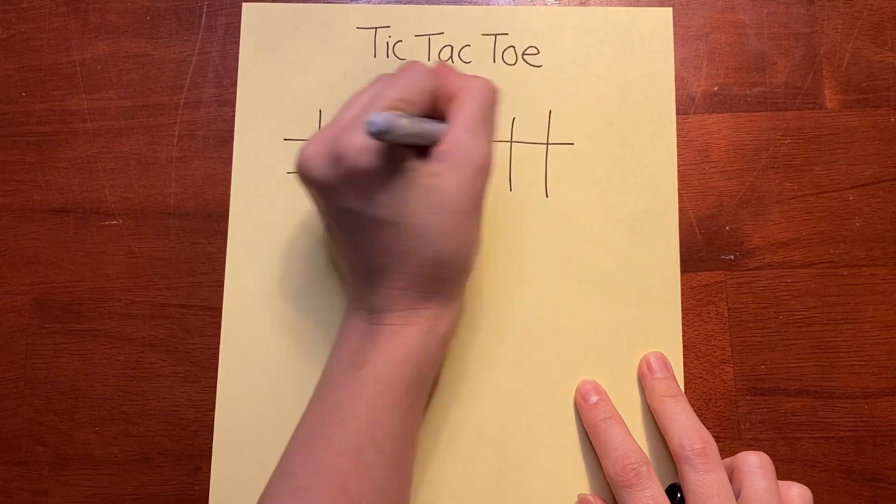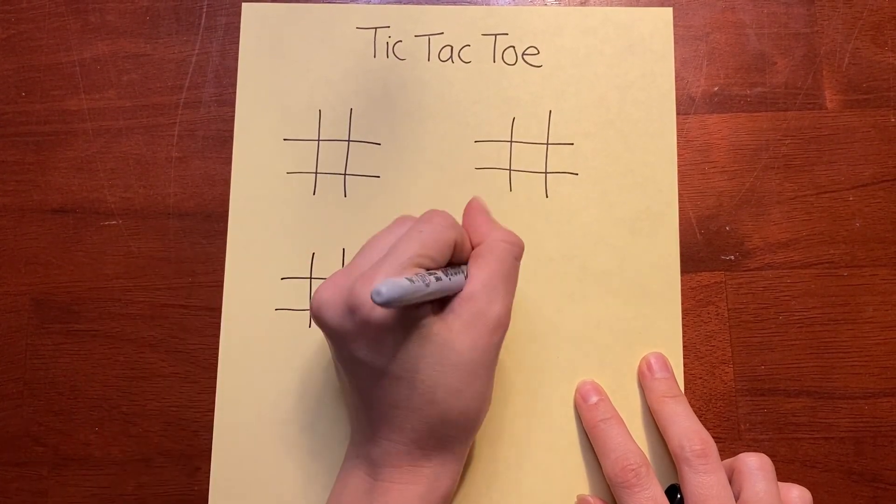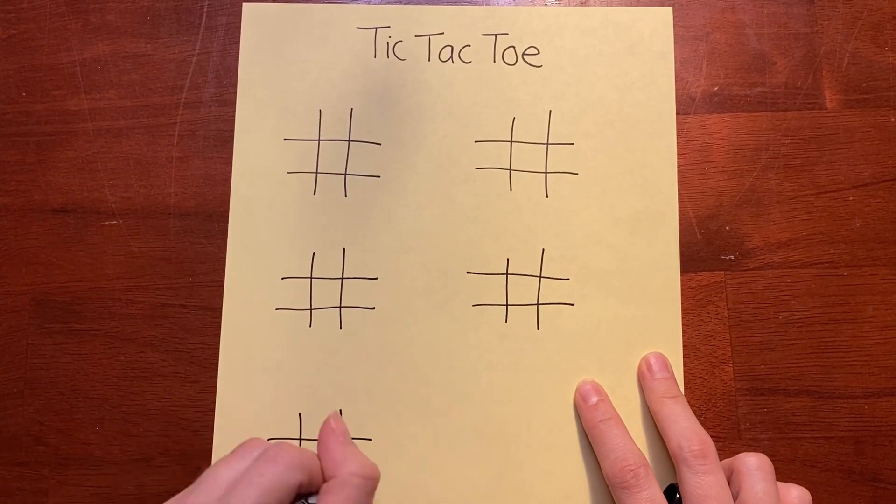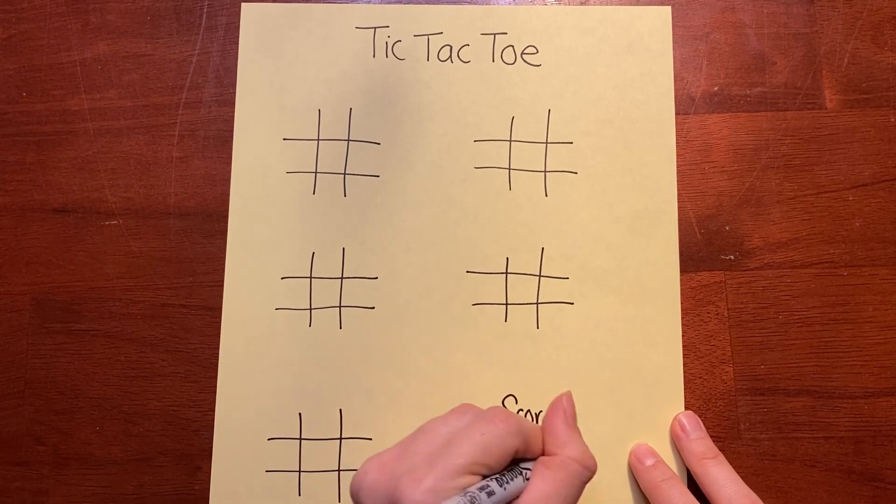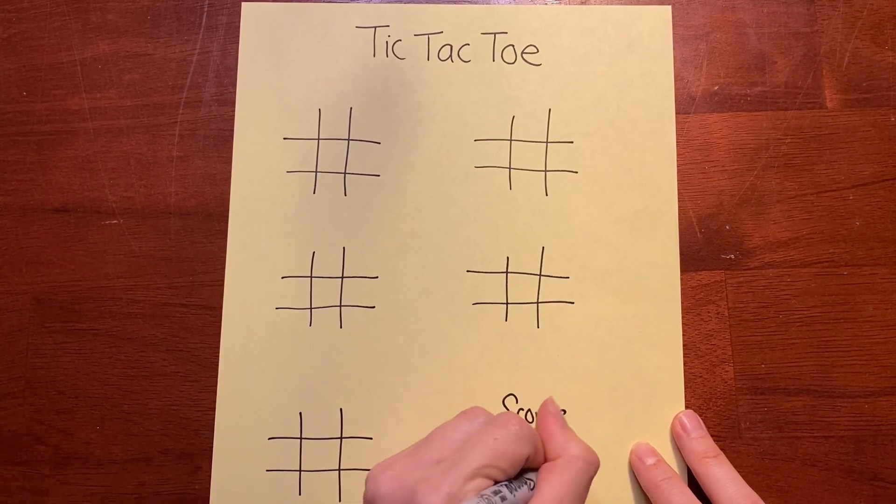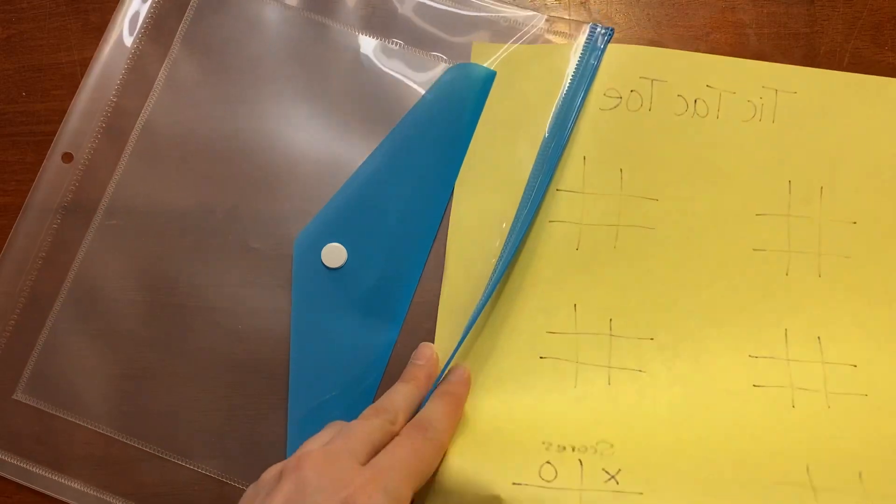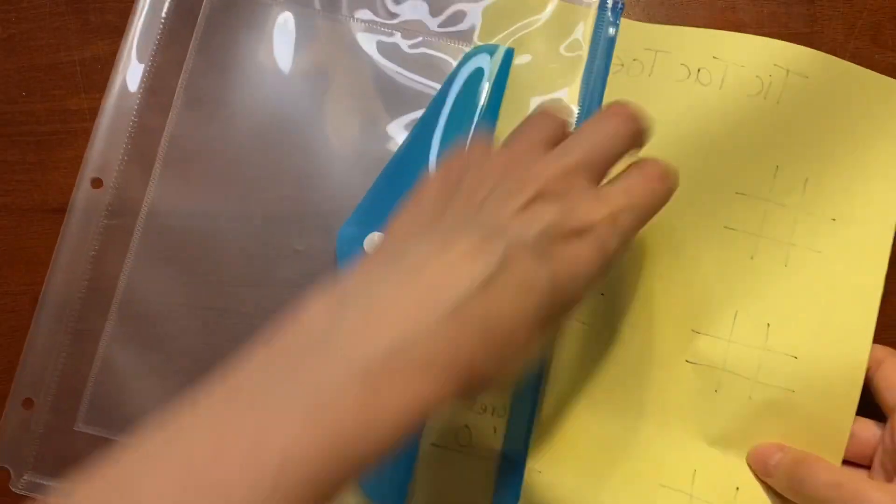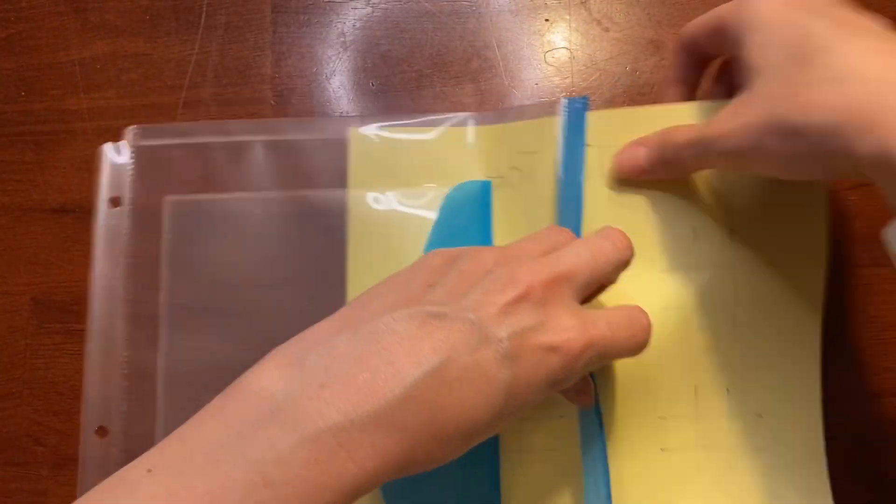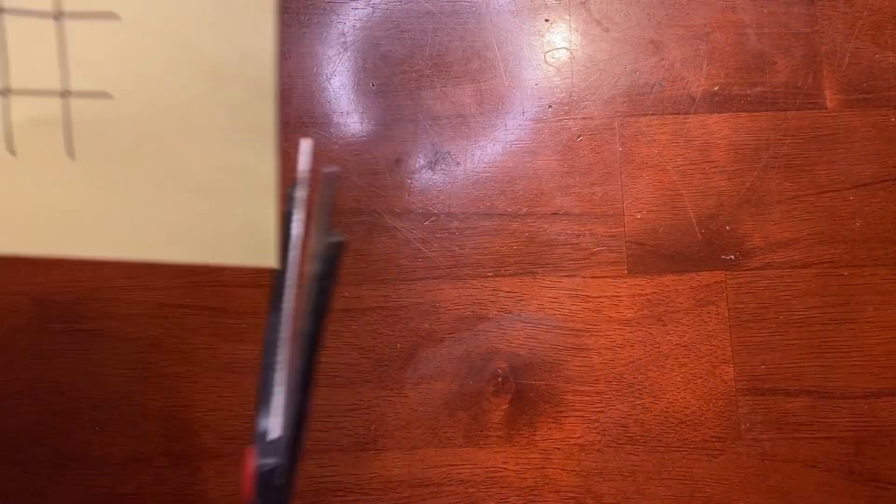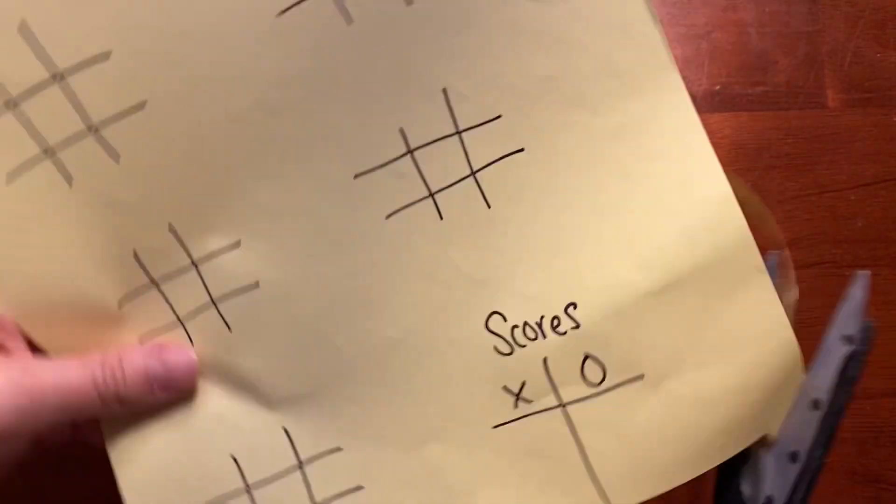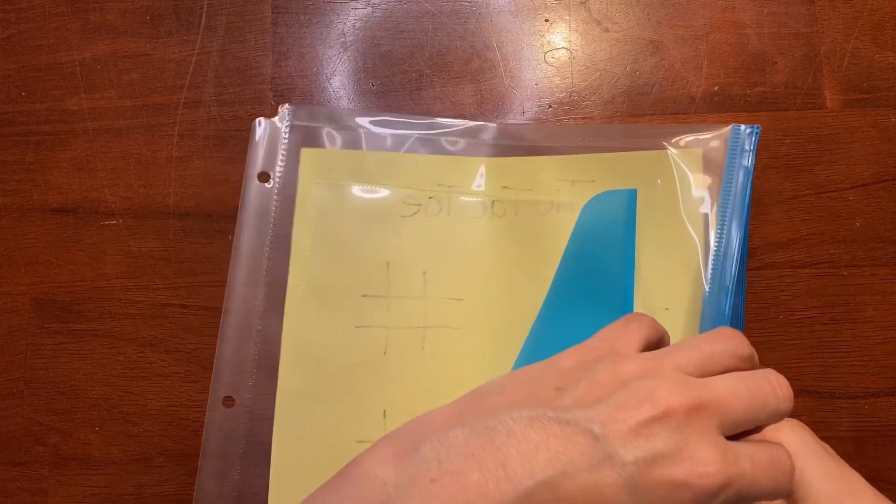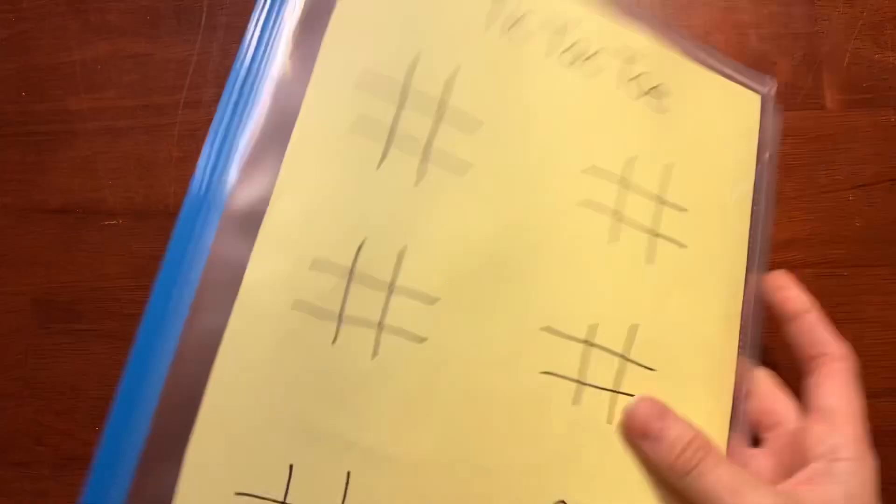Number three, tic-tac-toe. We love tic-tac-toe in this house. Draw a few tic-tac-toe boards right on the paper. In this case, I used yellow because I was getting bored of white. Use whatever color you'd like. And when I went to stick it into the pocket, I was having a little bit of trouble. So we're just going to chop-chop this paper up a little bit so that it fits into the pocket a little bit easier.